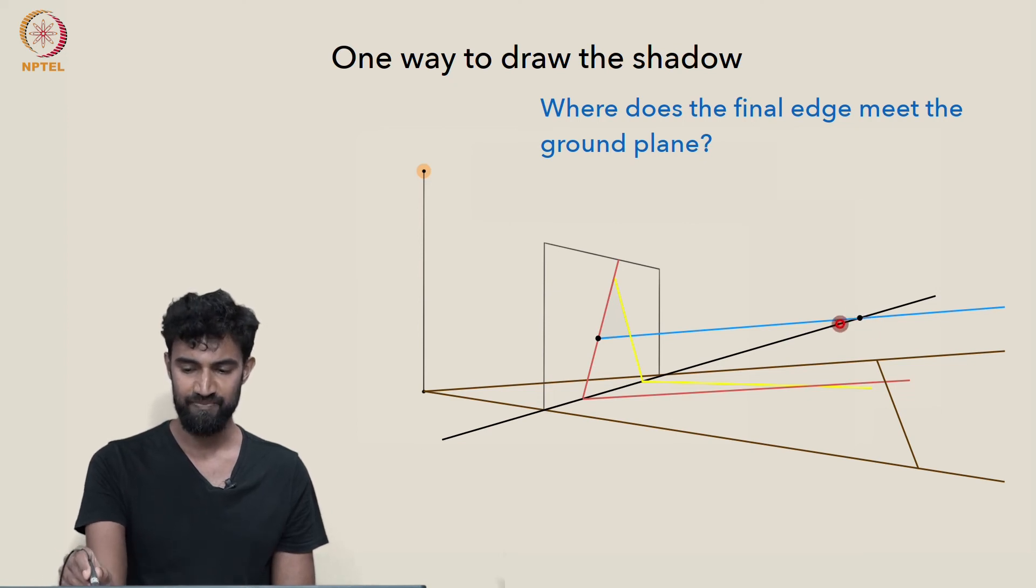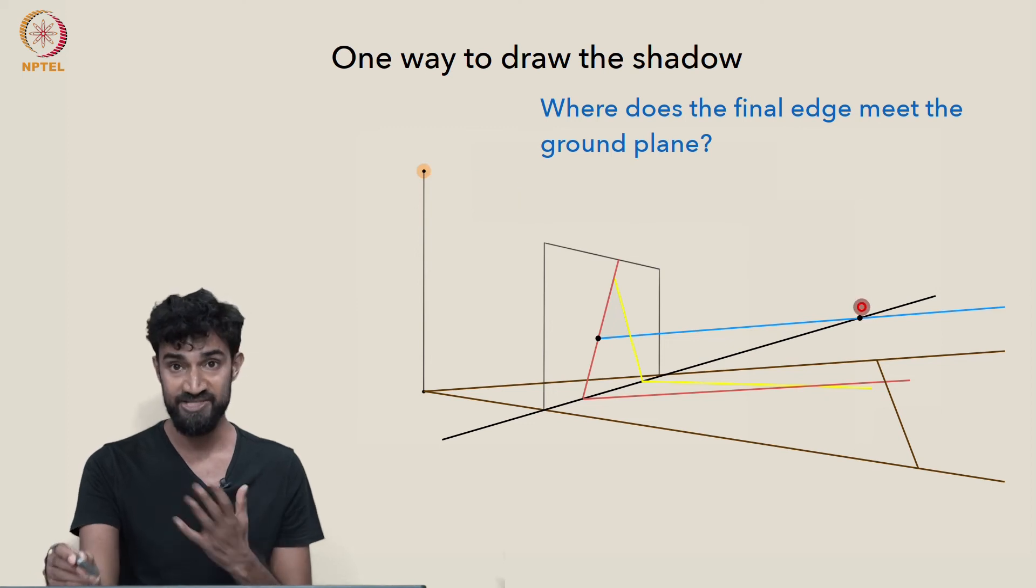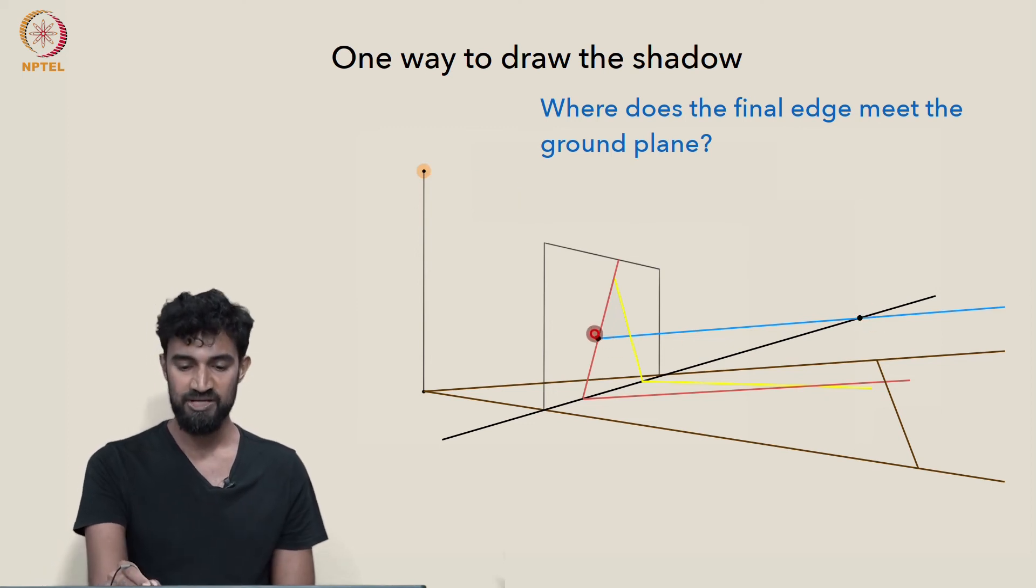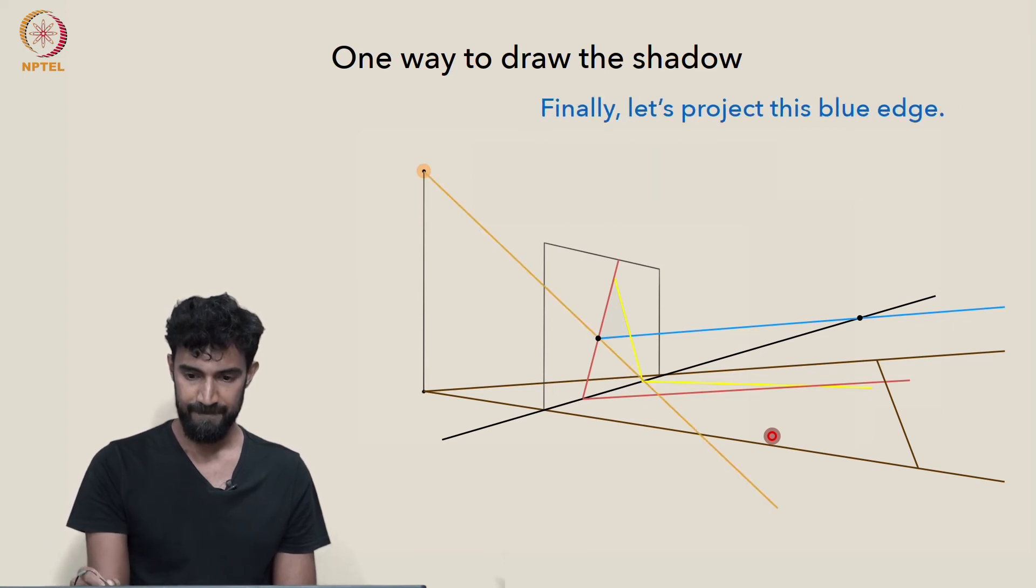And the projection of that point to the ground plane is done, just as before. So we have to worry about the shadow of this point. And what's the shadow of this point? Well, it intersects the red line. So its shadow intersects the red shadow. So it's right there.